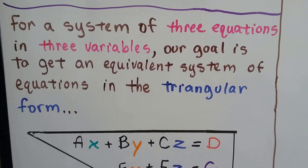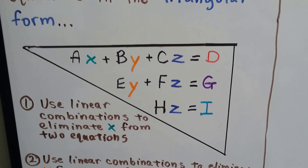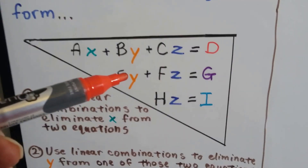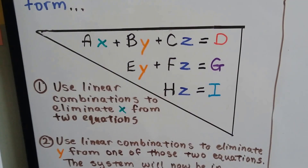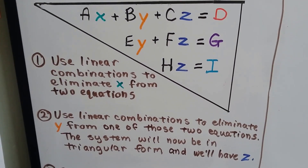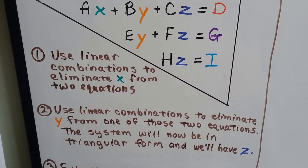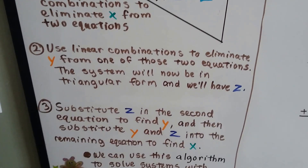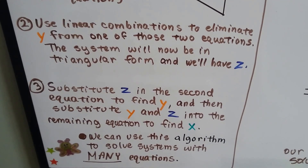For a system of three equations and three variables, our goal is to get an equivalent system of equations in a triangular form. We're going to slowly get rid of the x, then get rid of the y and solve for z, and then use that to plug back into the other equations to solve for y and x. We use linear combinations to eliminate the x from two equations, then eliminate the y from one of those two equations, and the system will now be in triangular form and we'll have z. We substitute z into the second equation to find y, then substitute y and z into the remaining equation to find x.